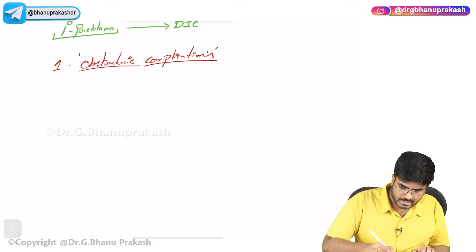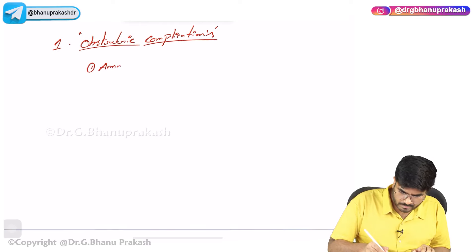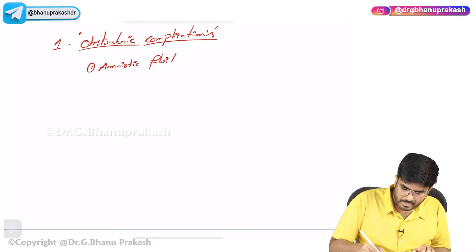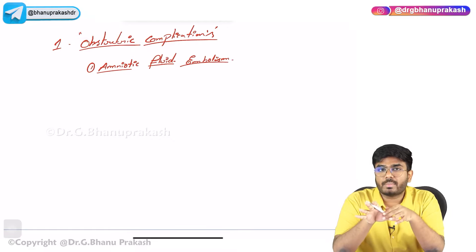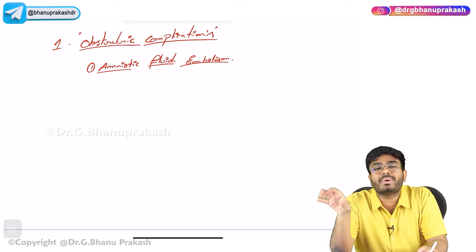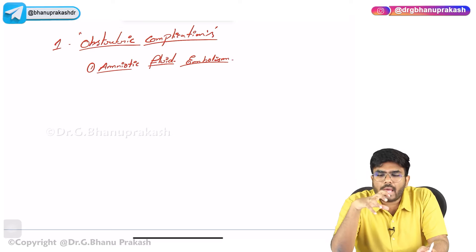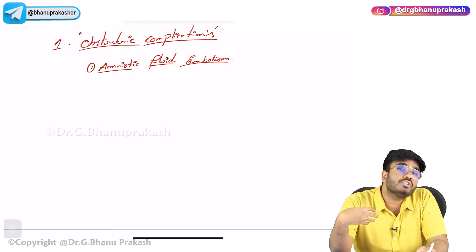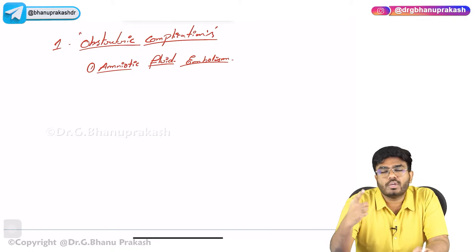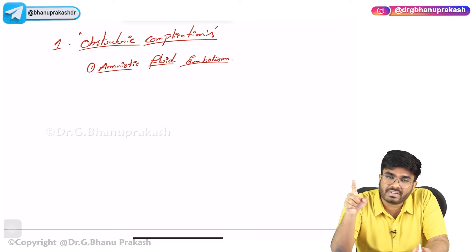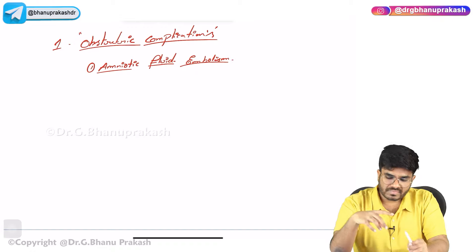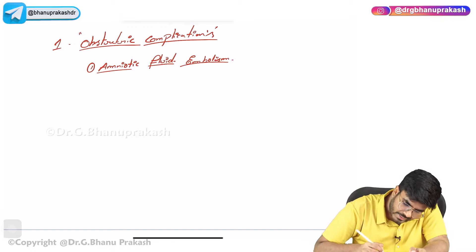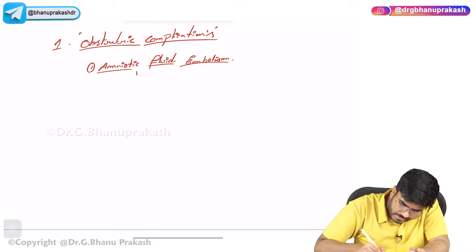Which obstetric complications? Number one is amniotic fluid embolism. What happens is the amniotic fluid, in which the baby is swimming, enters the mother's maternal circulation during delivery. This amniotic fluid contains a lot of tissue factor — clotting factor 3 — which activates 7, 10, 5, 2, and 1, automatically triggering clotting. Whenever amniotic fluid embolism occurs, it can trigger DIC because amniotic fluid contains tissue factor.